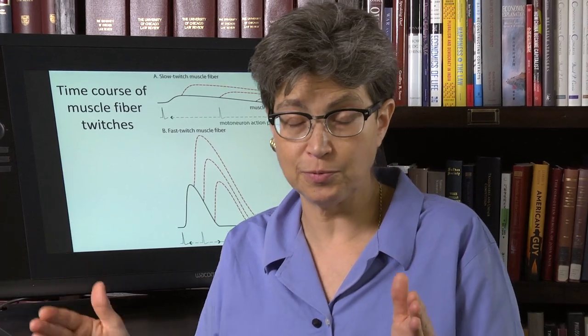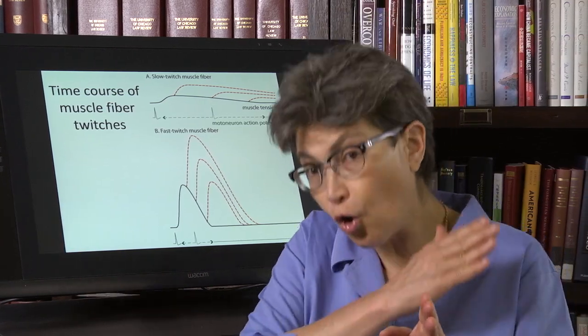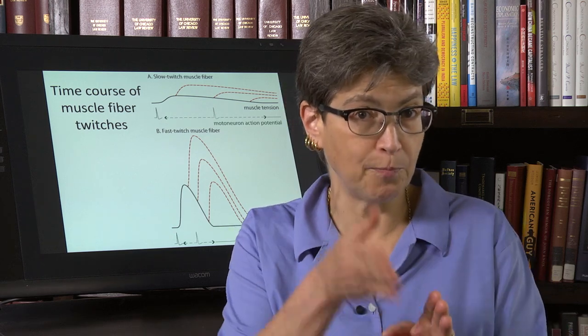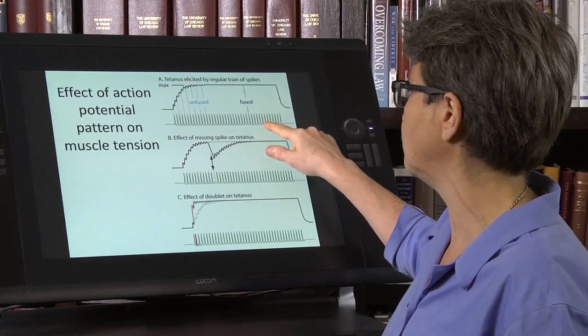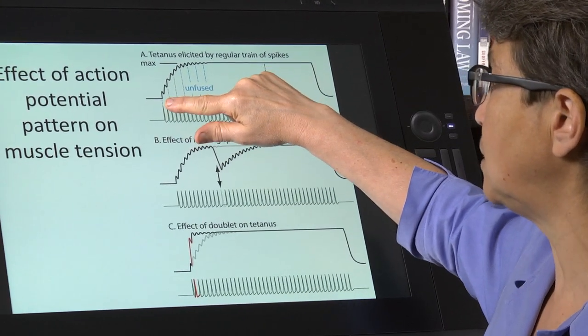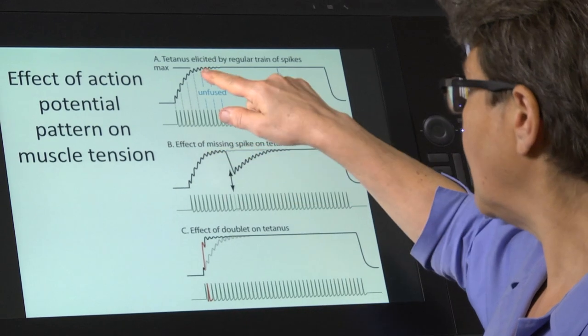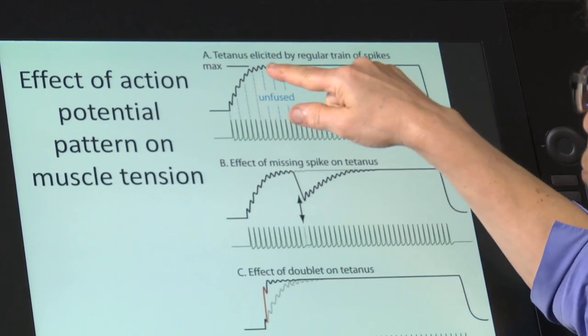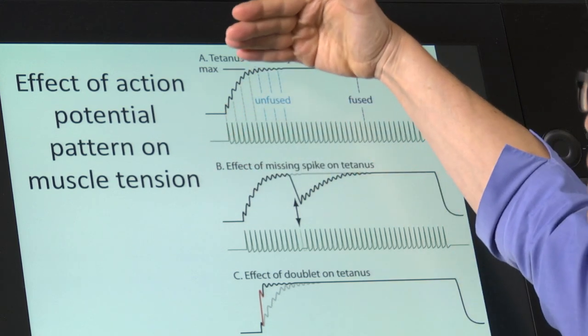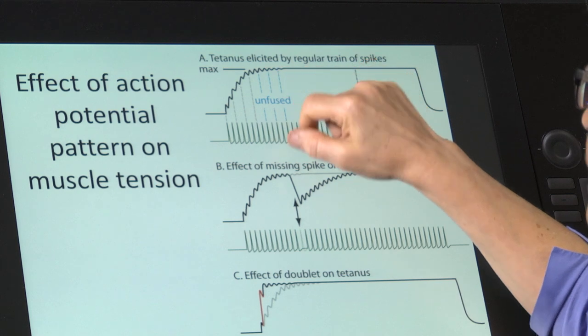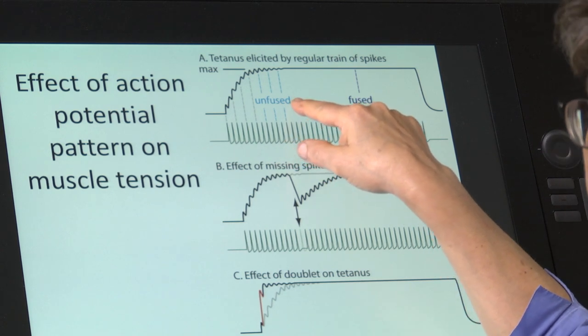And so widely separated action potentials will not summate. Now let's consider what would happen if we, instead of having two action potentials, we have a whole train of them, a whole series of them, and we're doing this experimentally. So we're going to put them in at regular intervals and we're recording the muscle tension. And what you see is that every time there's an action potential, there is an increase in muscle tension. And then you reach, you start to plateau, but you can still see the effect of every action potential. So you're obviously topping out, but there's still an effect of this action potential. It's producing a little blip and this is called unfused tetanus.